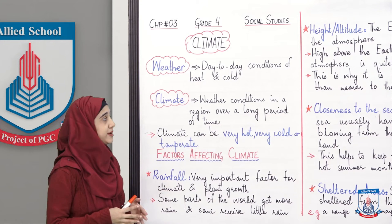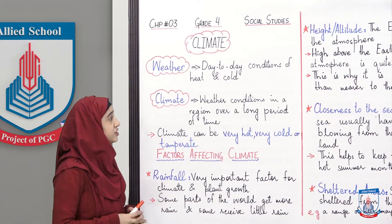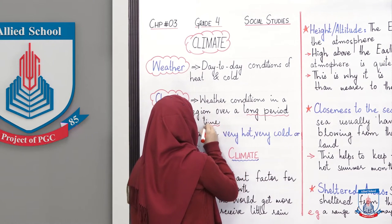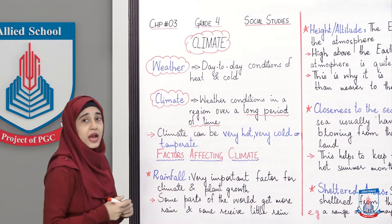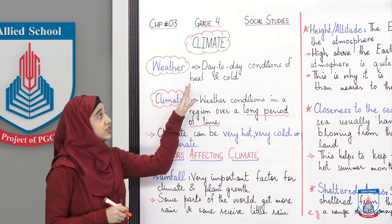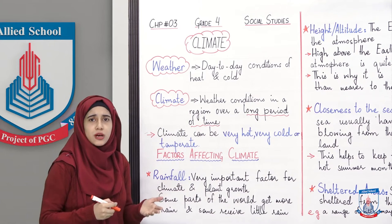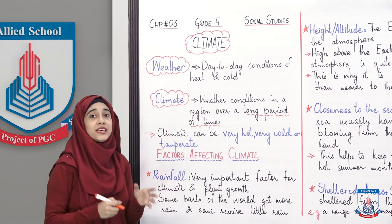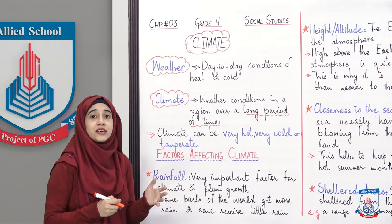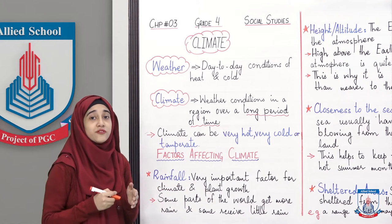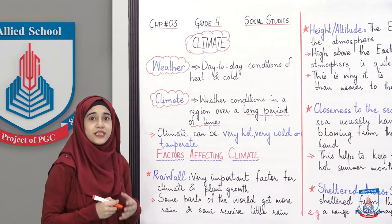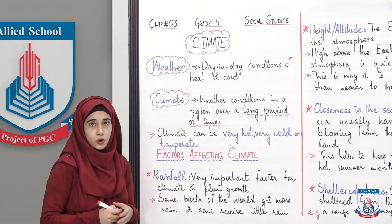Then talking about climate — weather conditions in a region over a long period of time. Children, note these words: over a long period of time. You should not confuse weather and climate. Weather is day-to-day conditions, यानि تقریباً روز کا مौسم. Climate کسی بھی جگہ کا وہ مौسم ہوتا ہے جو ایک لمبے عرصے تک رہے — it could be as long as five or ten years.